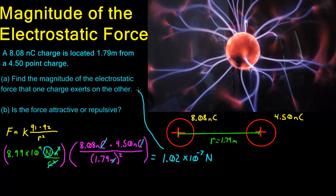So this is part A. For part B, is the force attractive or repulsive? Any time you have a positive and a positive they are going to repel. If it were a positive and a negative they would attract, and if it were a negative and a negative it would also repel. Both of these charges are positive — if this 4.5 were negative, they would be attracting.